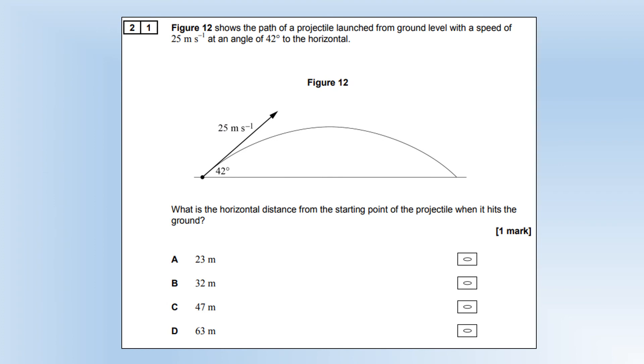Figure 12 shows the path of a projectile launched from ground level with a speed of 25 meters per second at an angle of 42 degrees to the horizontal. What is the horizontal distance from the starting point of the projectile when it hits the ground? I'm going to figure out how long it's in the air and use that to figure it out. When it hits the ground, its displacement in the vertical direction is going to be zero. We know its initial and final speed are going to be the same but in opposite directions. We know the acceleration, so we can plug those numbers in to find how long it's in the air and then use that to figure out how far it will travel. That's option D.